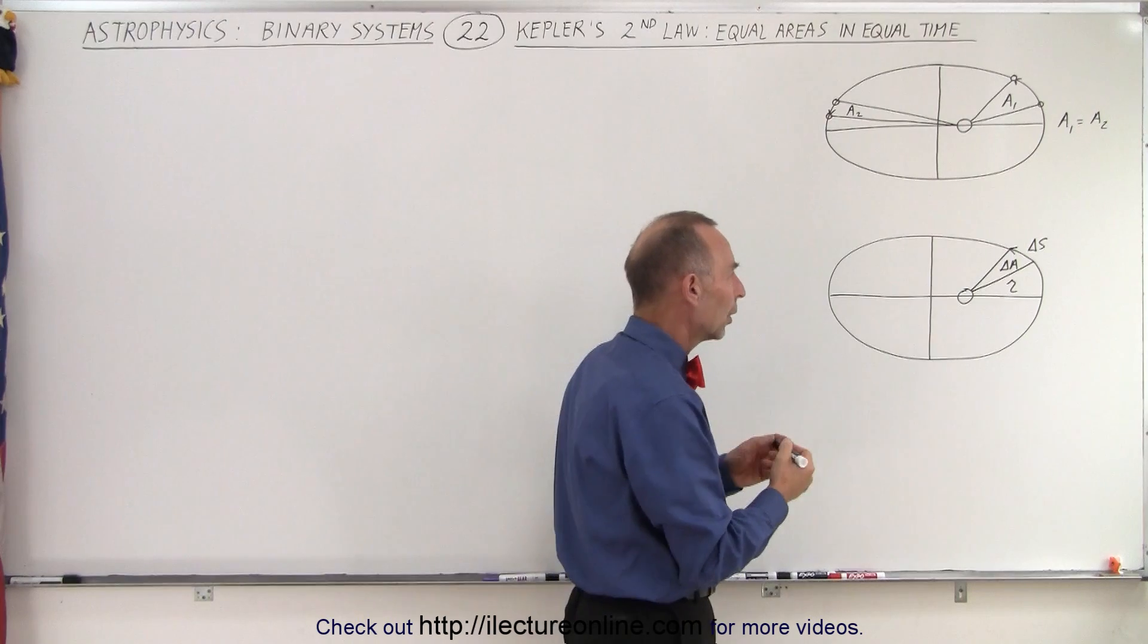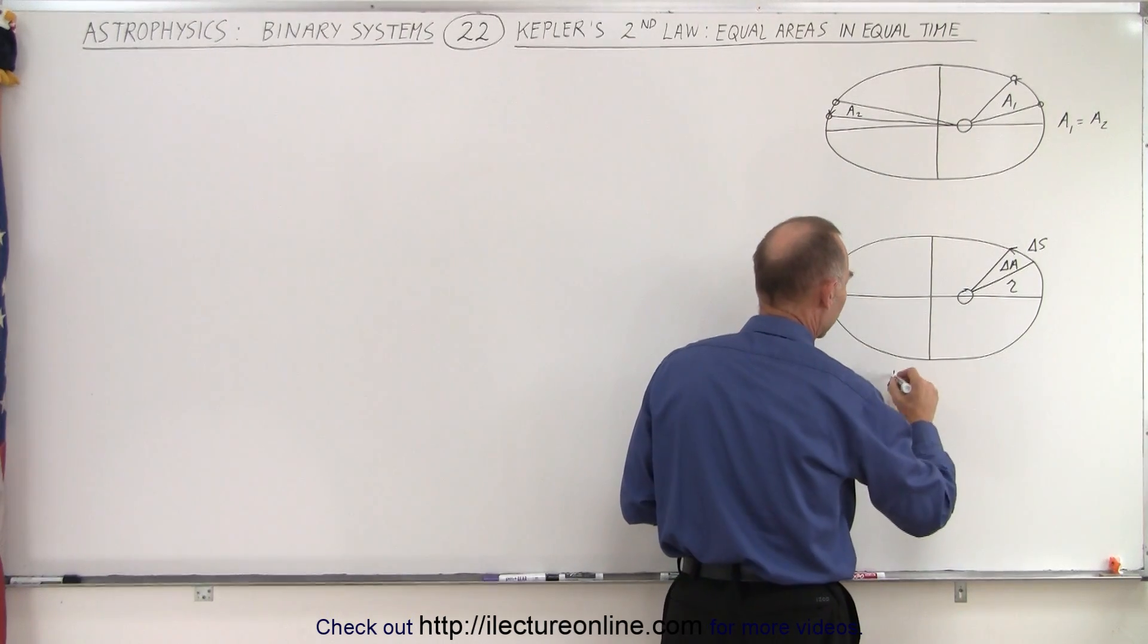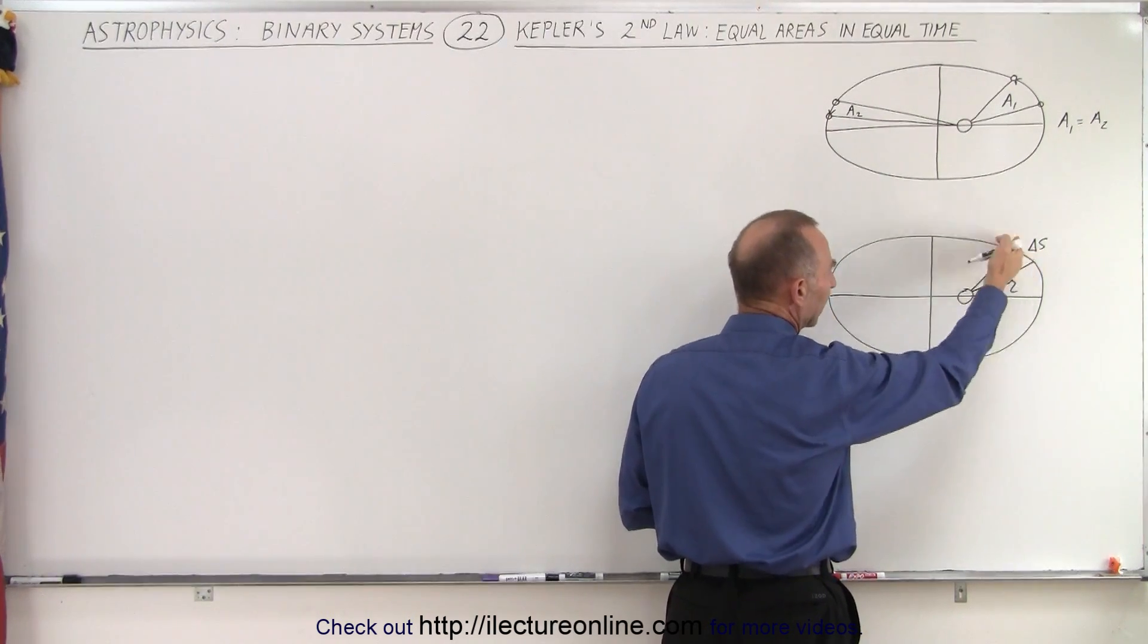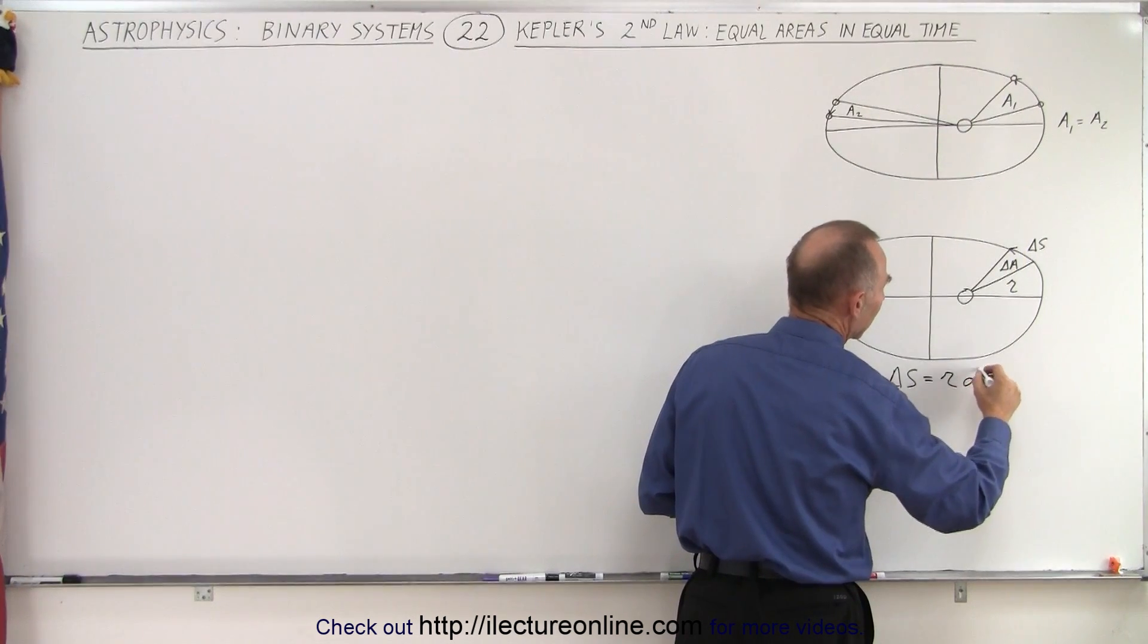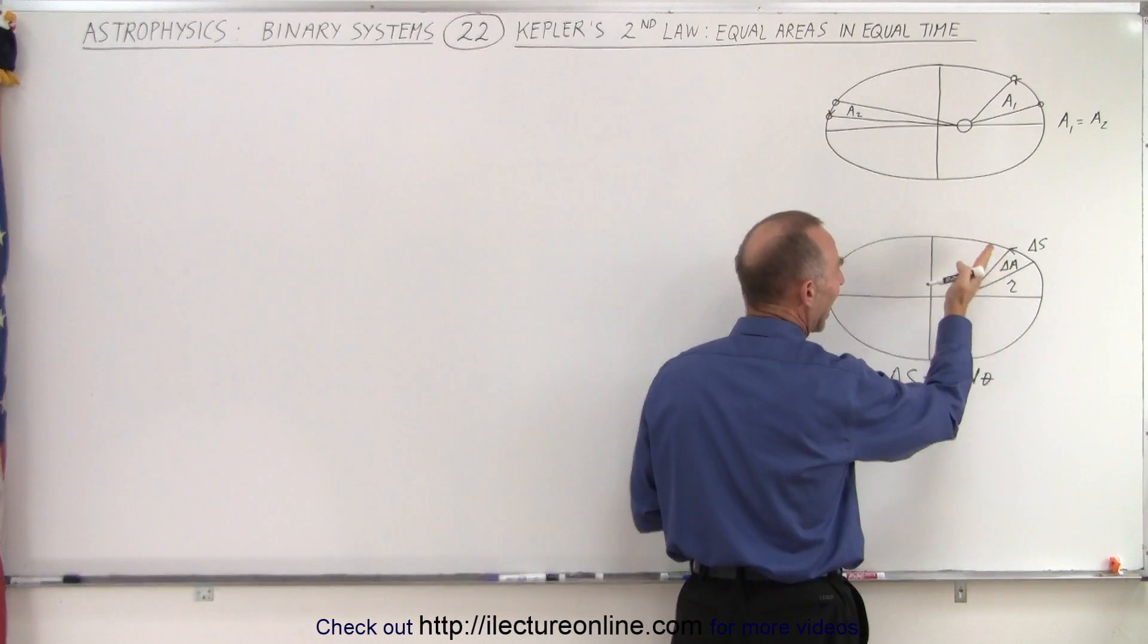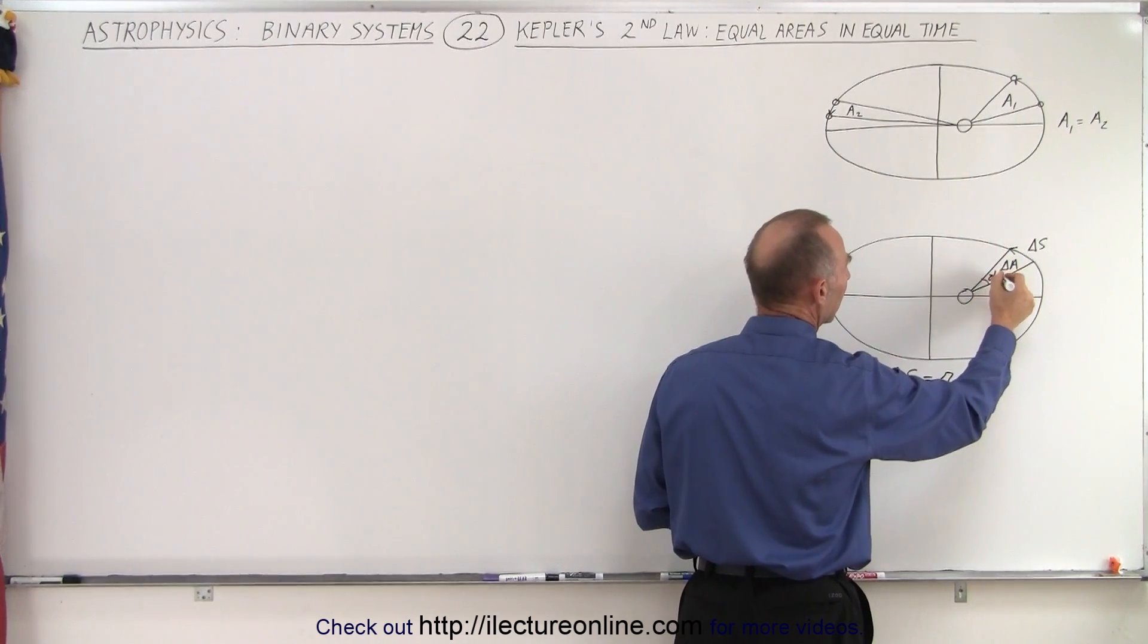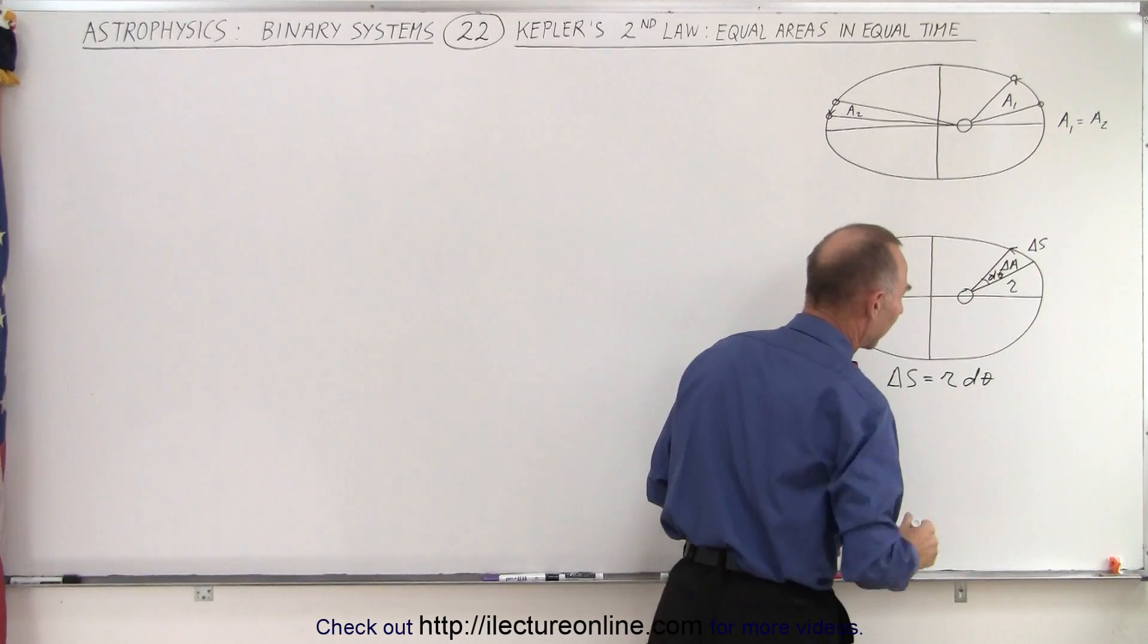So how do we express the concept of delta S? The amount of arc length traveled by the planet that would be equal to R times d theta. The amount of angle that swept out right here, so this would be d theta, so R d theta would be delta S.